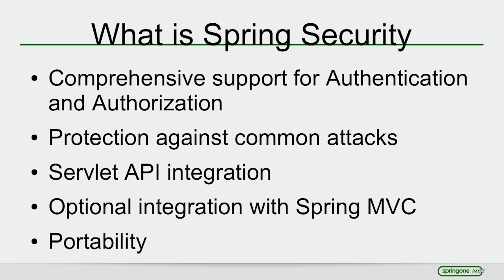Furthermore, you can layer on top of that with method-level security. Method-level security can be implemented just by adding an annotation to your service tier, and you can state — given a particular user, are they allowed to invoke a particular method? That annotation can also contain a Spring expression that makes your access control decision based upon your return value or arguments passed in.